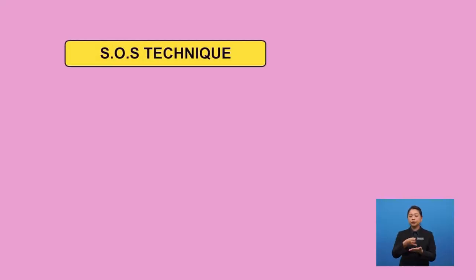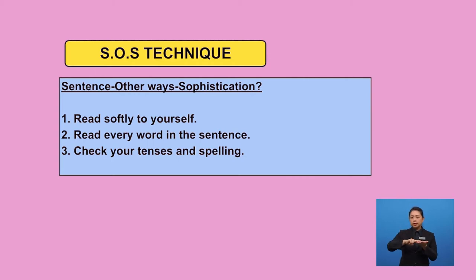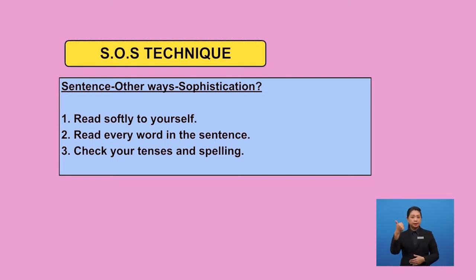Finally, edit your work before you submit your paper. I like to use the SOS technique when editing my own work — Sentence, Other Ways, Sophistication. Read every sentence slowly to yourself. Ask yourself if you could make the sentences better. Is there a better way to express your ideas? Are the words sophisticated and on point?